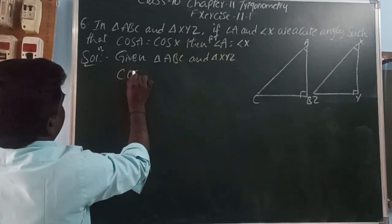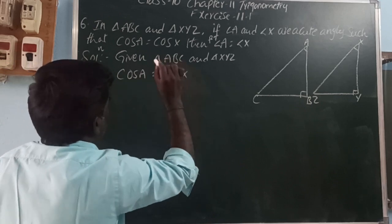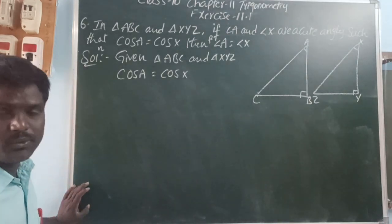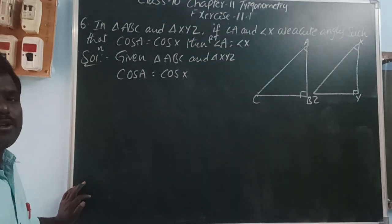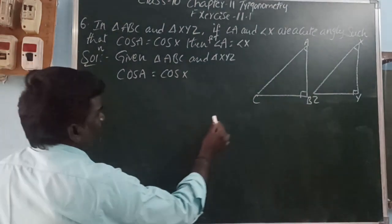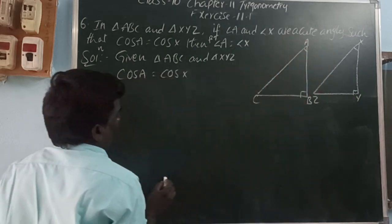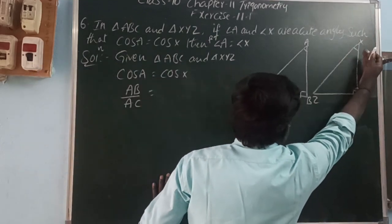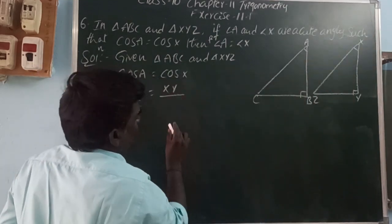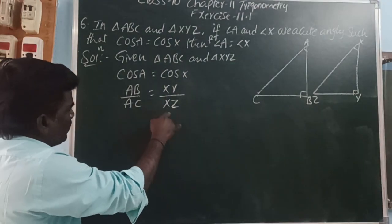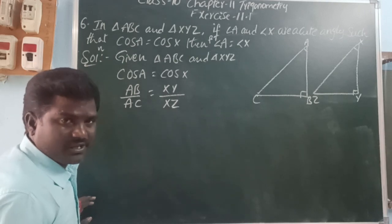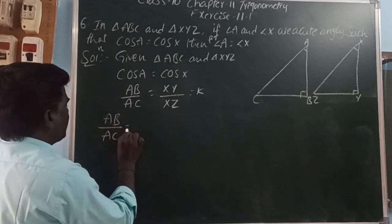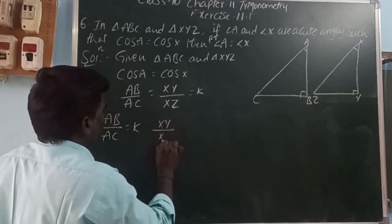The cos ratio is adjacent side to hypotenuse. So cos A equals adjacent side AB divided by hypotenuse AC, giving AB by AC. And cos X equals adjacent side XY divided by hypotenuse XZ, giving XY by XZ. Since cos A equals cos X, both ratios equal k. So AB equals k·AC and XY equals k·XZ.